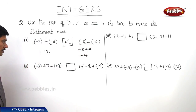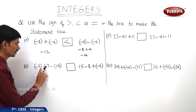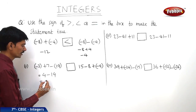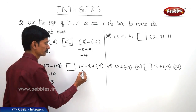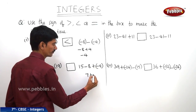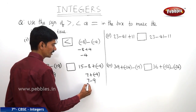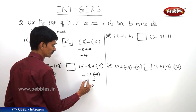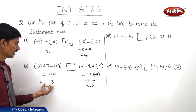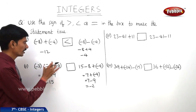Now let us take the second question. In the LHS: minus 3 plus 7 minus 19. Here minus 3 plus 7 is 4, then minus 19, so 4 minus 19 equals minus 15. Now let us see the RHS: 15 plus (minus 9) — since plus (minus) means minus — 7 minus 9 is minus 2. So here RHS is minus 2 and LHS is minus 15. Minus 15 is smaller than minus 2, so LHS is less than RHS.